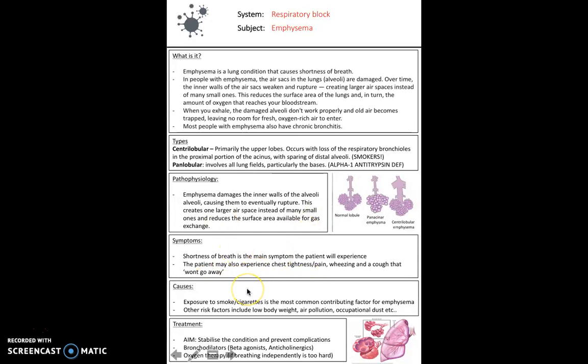Patients will naturally present, therefore, with shortness of breath and potentially a chest tightness that won't go away. They'll describe it as, essentially, a cough that won't go away as well. So causes, exposure to smoke and cigarettes is the main contributing factor for emphysema. However, other risk factors include low body weight, air pollution, and occupational dust.